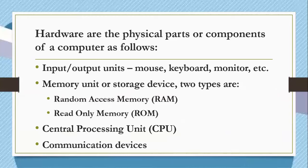Output units convert electronic data produced by the computer system and display them in a form that the user can understand. For example, a monitor, a printer, speakers, headphones, plotter, projector, and TV screen.